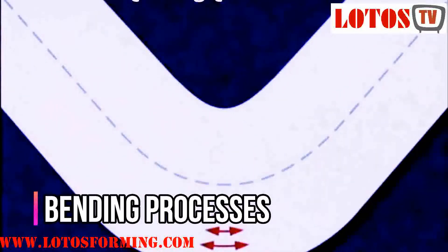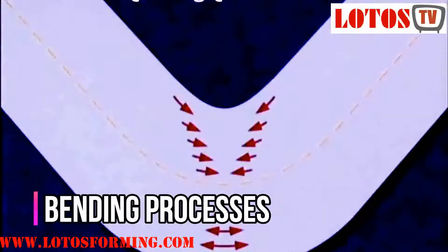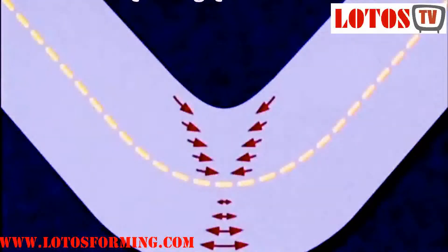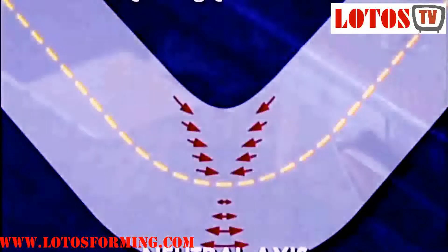Squeezing processes: most of the cold working squeezing processes have identical hot working counterparts or are extensions of them. The primary reasons for deforming cold rather than hot are to obtain better dimensional accuracy and surface finish. In many cases, the equipment is basically the same, except that it must be more powerful.